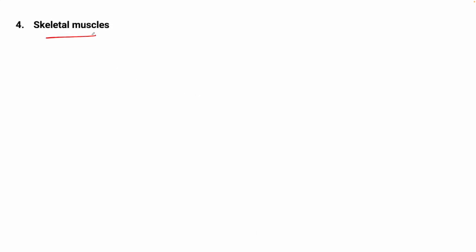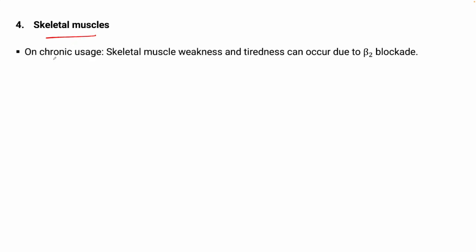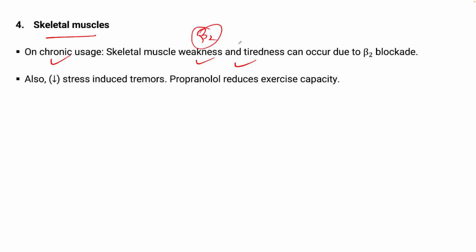Regarding the effect on skeletal muscles: chronic usage of beta blockers causes weakness and tiredness in skeletal muscles due to beta-2 blockade, because beta-2 receptors have a role in skeletal muscle function. There will also be a reduction in stress-induced tremors, and propranolol reduces exercise capacity.